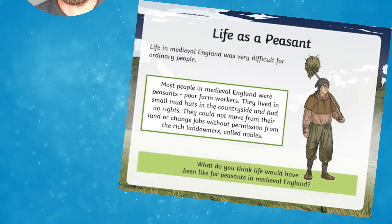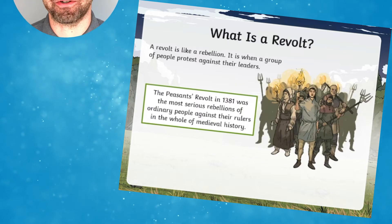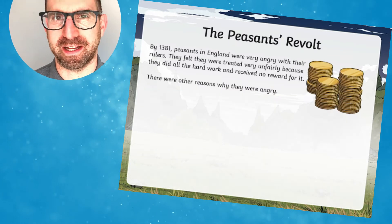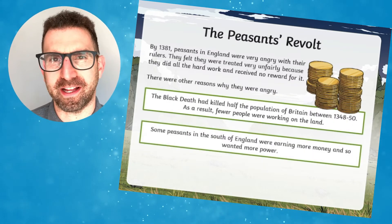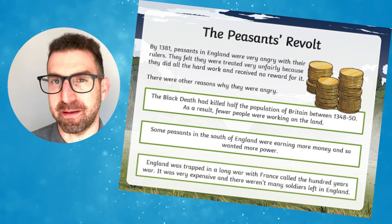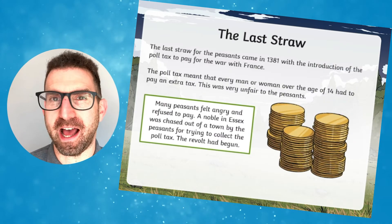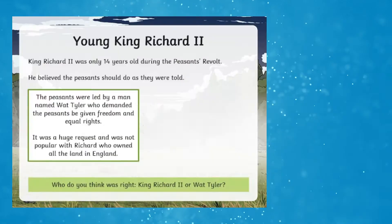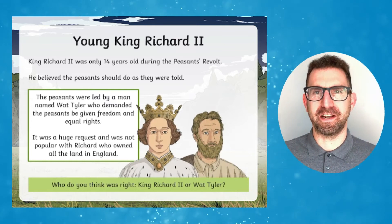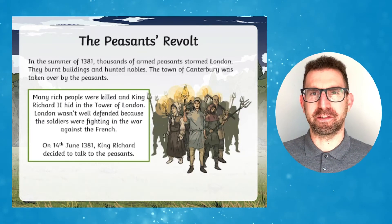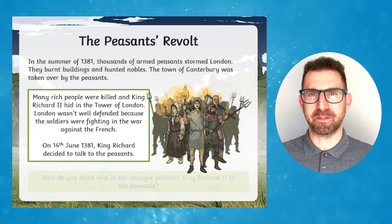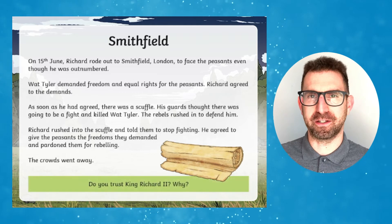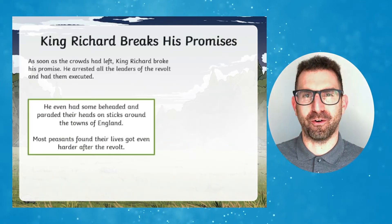It includes contextual information to help students understand why the revolt took place. It explains what life was like for peasants in medieval England and the circumstances that led to the revolt. This resource can also help learners form their own judgments on whether the actions of the peasants and Richard the Second were good or not.